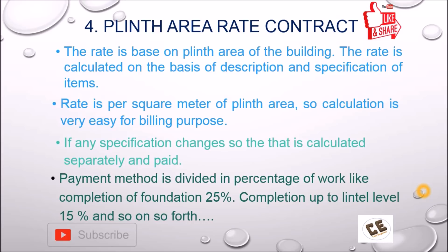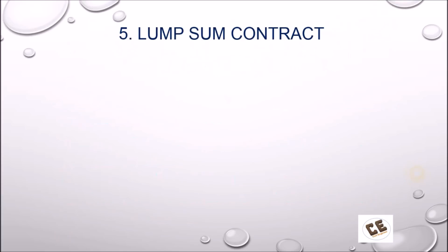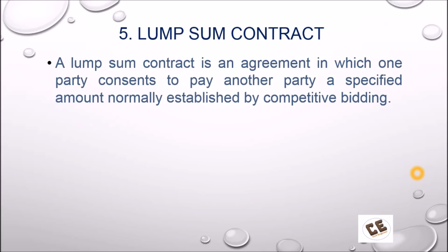The payment method in this contract is divided by percentage of work completion — for example, completion of foundation: 25%, up to lintel level: 15%, up to slab, and so on. These types of payment terms are defined in the contract.